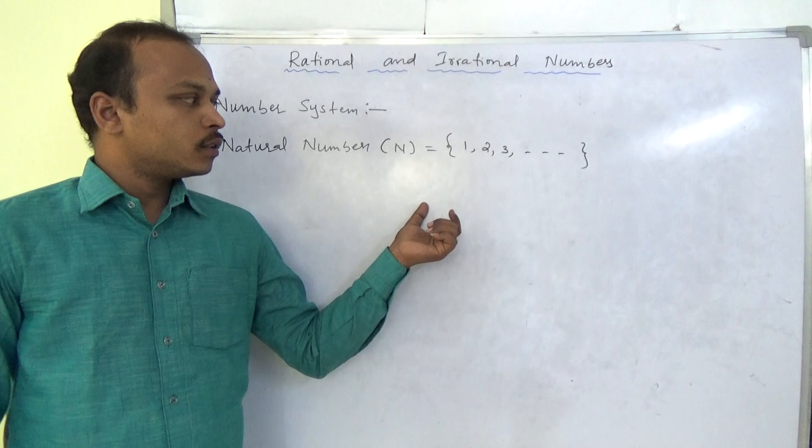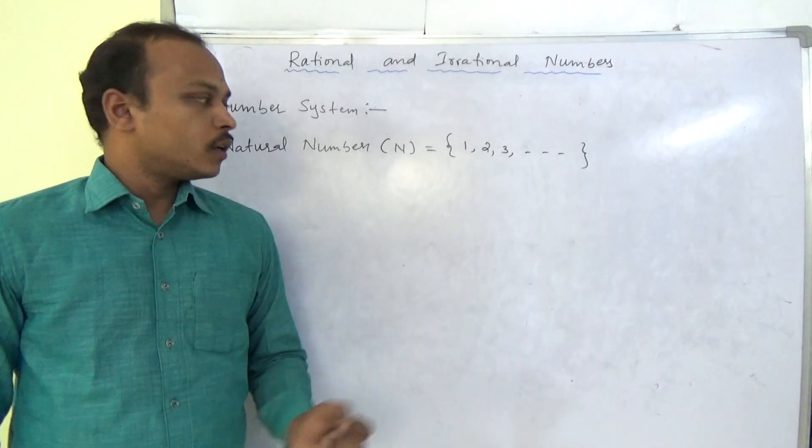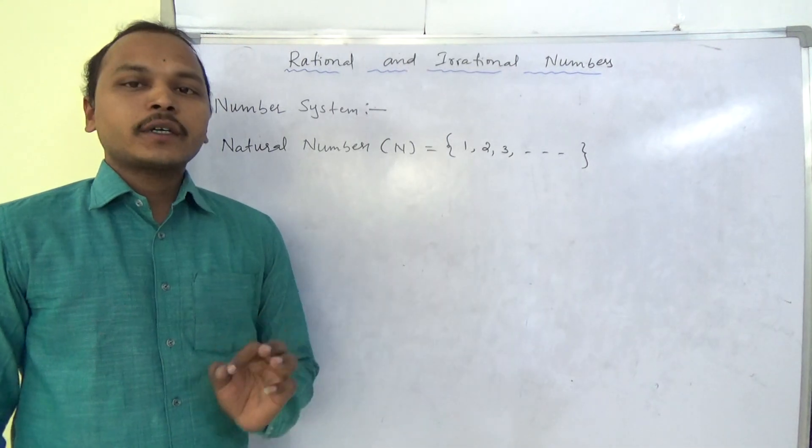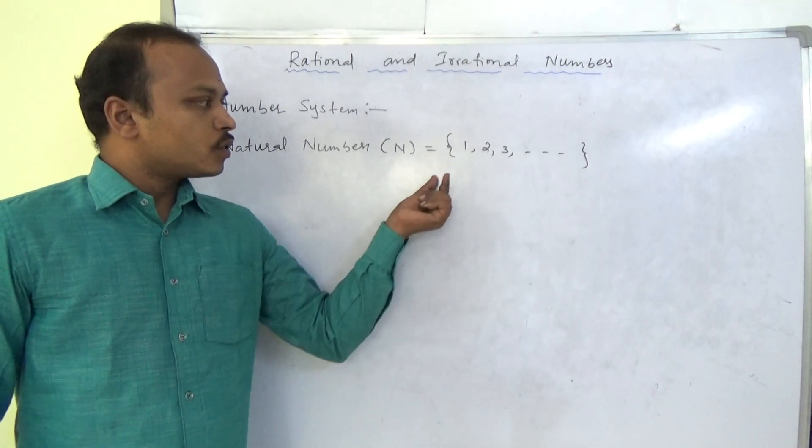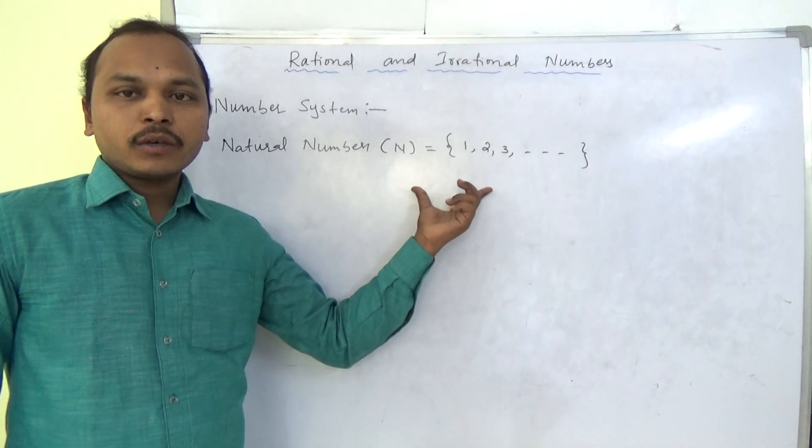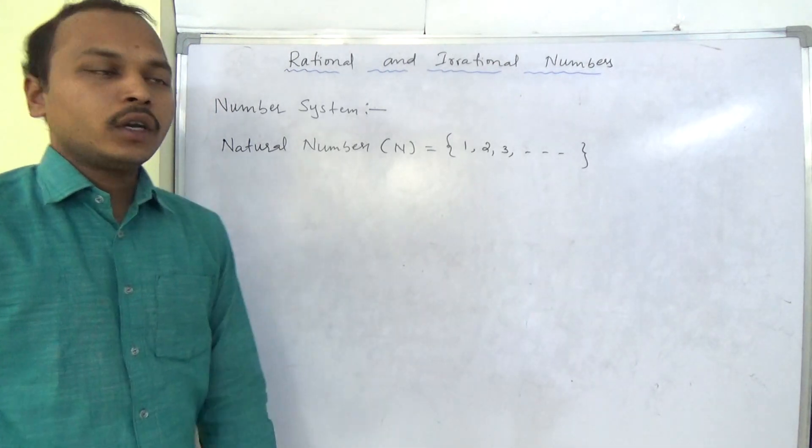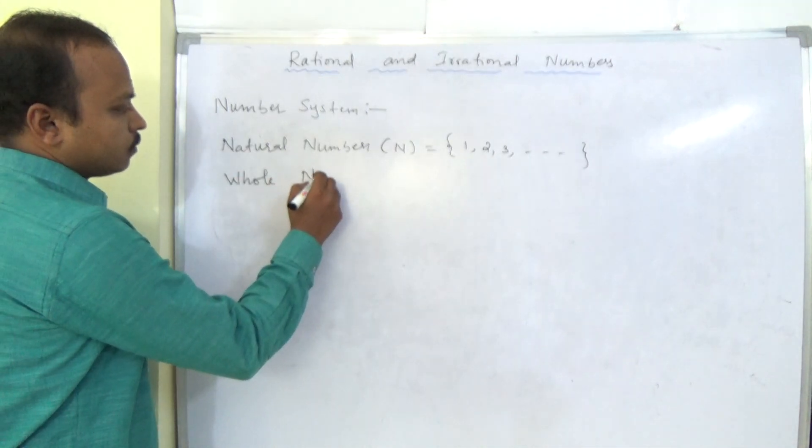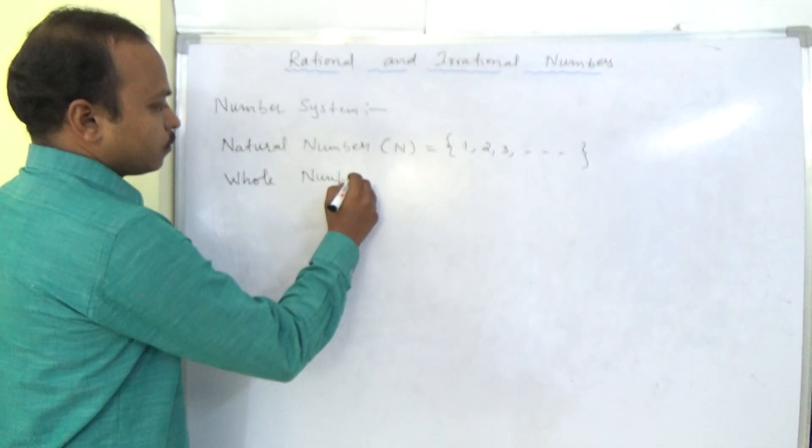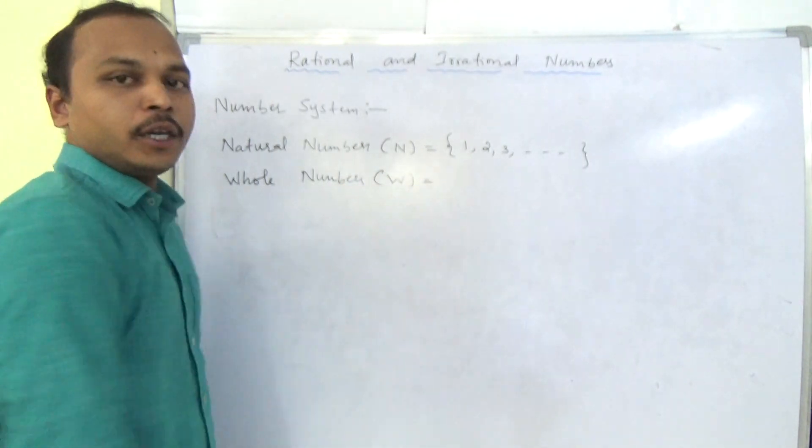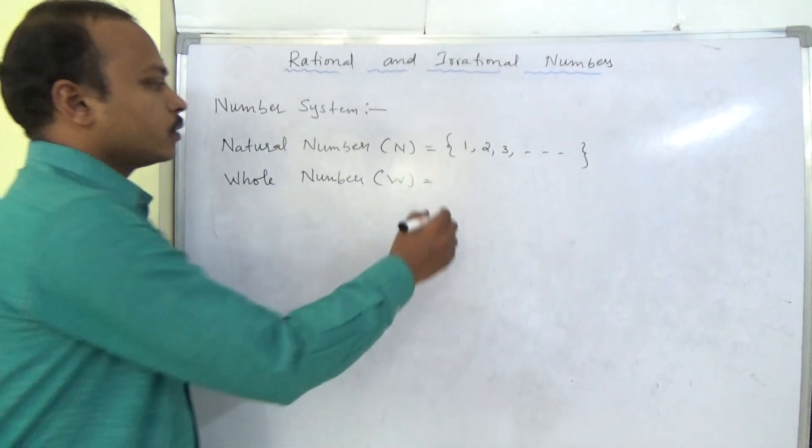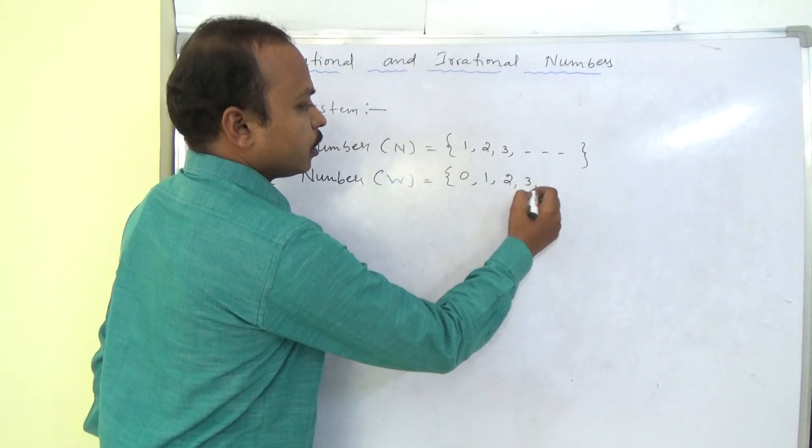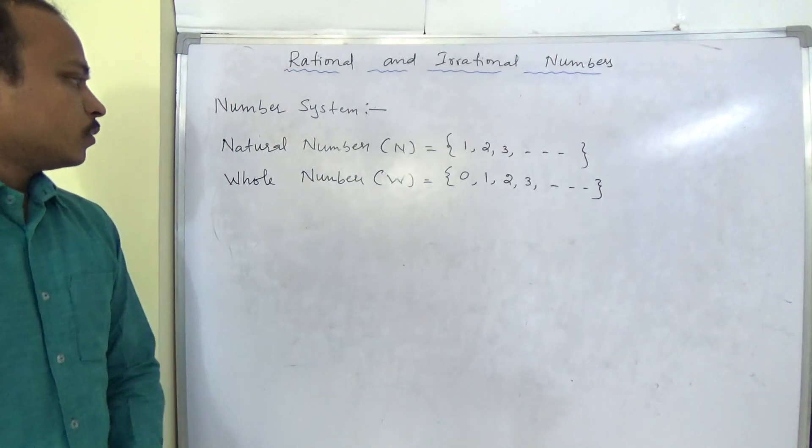Zero's specialty is that zero was given by our Indian mathematician Aryabhatta. So when we include zero to the natural numbers, then it becomes whole number system. Now these are whole numbers. Whole numbers will denote with W. Now these numbers will start from zero, one, two, three, and so on up to infinity.